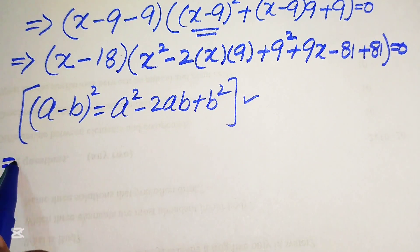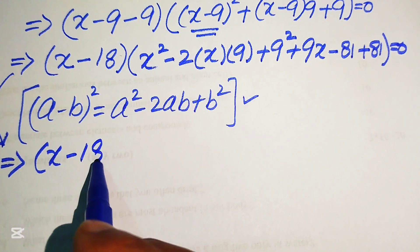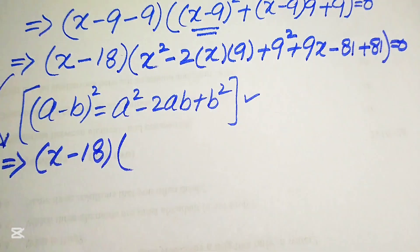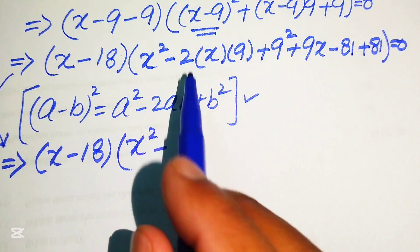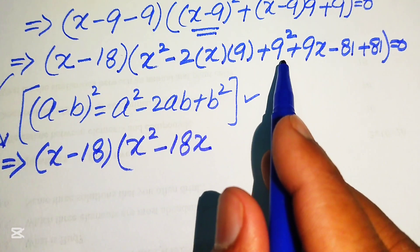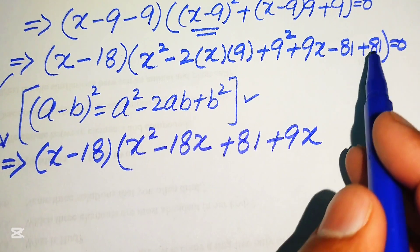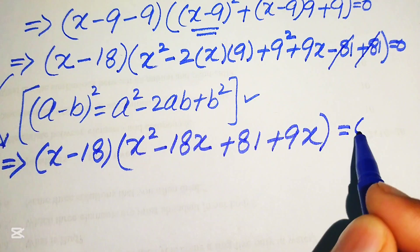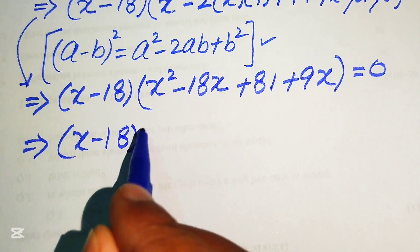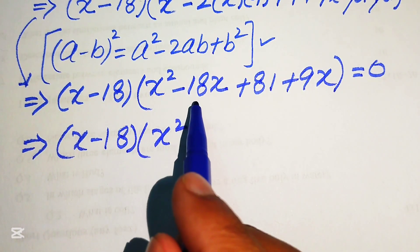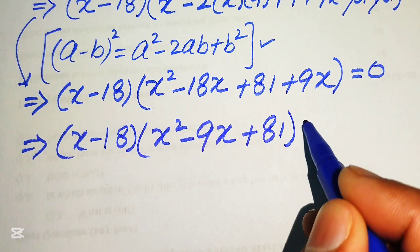Combining like terms inside the second factor: x² - 18x + 81 + 9x - 81 + 81 simplifies to x² - 9x + 81. The +81 and -81 terms cancel, giving us (x - 18)(x² - 9x + 81) = 0.